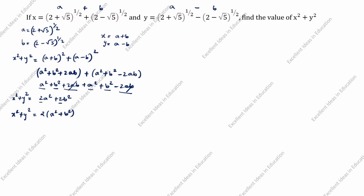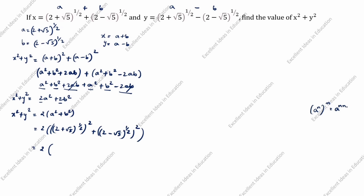Now substituting: a = (2+√5)^(1/2), so a² = [(2+√5)^(1/2)]² = (2+√5)^1 = 2+√5. Similarly, b² = [(2-√5)^(1/2)]² = (2-√5)^1 = 2-√5. Using the exponential rule a^(n·m), the exponents (1/2)×2 cancel to give 1.